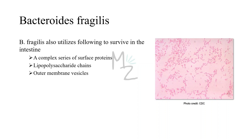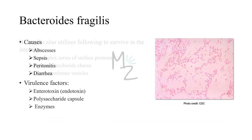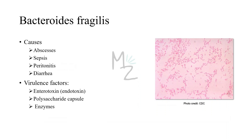Bacteroides Fragilis utilizes several things to survive in the human intestine. It has a complex series of surface proteins, lipopolysaccharide chains, and outer membrane vesicles. It is the most common cause of serious anaerobic infections like abscesses, sepsis, peritonitis, and diarrhea. It has certain virulence factors like enterotoxin, the endotoxin — the Bacteroides Fragilis toxin, BFT. It has a polysaccharide capsule and also produces certain enzymes.